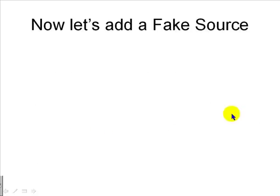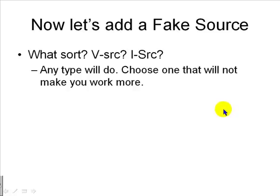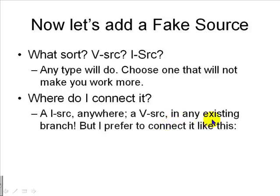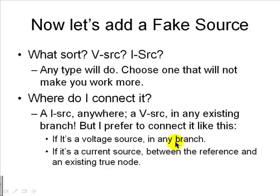How are we going to do this? Well, we introduce a fake source. What type of fake source? A V-source? An I-source? Either. You choose one that will not make you work more. Where do you connect it? A current source you can connect anywhere. A V-source in any existing branch. But I prefer to connect them like this, actually. If it's a fake V-source, connect that in any branch. If it's a current source, connect that between the reference and any existing true node.